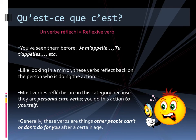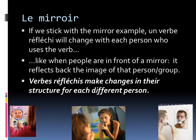Like looking in a mirror, these verbs are reflective. They reflect back on the person who is doing the action. Most verbes réfléchis are in this category because they're personal care verbs. You do the action to yourself, and generally these are things that other people can't or don't do for you after a certain age. If we stick with the miroir exemple, and we think about the way that a verb will reflect back on the person, a verbe réfléchi will change with each person who uses it. Kind of like when people are in front of a mirror, it'll reflect back the image of that person or group of people. Verbes réfléchis make changes in their structure for each personne différent.